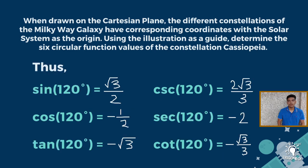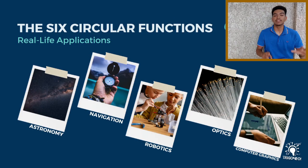At this point, we have completed and solved the six circular function values of Cassiopeia. To recap: our sine theta is square root of 3 over 2, our cosine theta is negative 1/2, our tangent theta is negative square root of 3, our cosecant theta is 2 square root of 3 divided by 3, our secant theta is negative 2, and lastly, our cotangent theta is negative square root of 3 over 3.